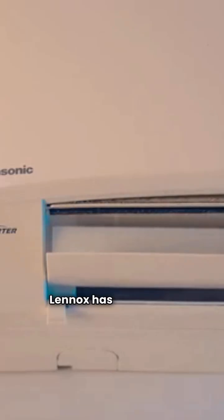Now, let's compare models. Lennox has the ML193E with 93% AFUE, while Rheem's R95P edges ahead with 95% AFUE. Simple as that.